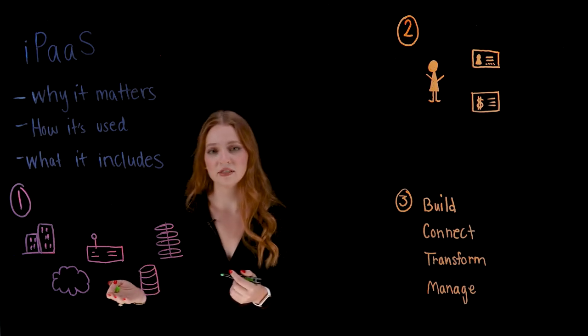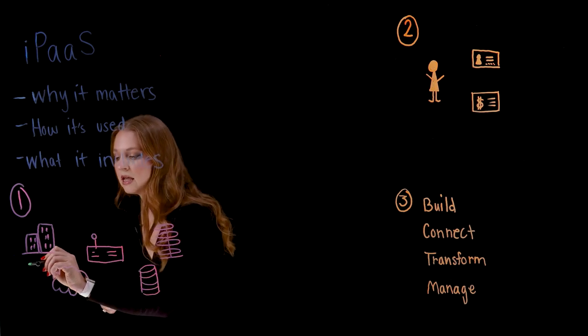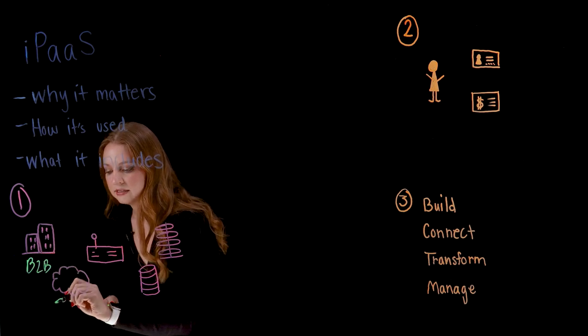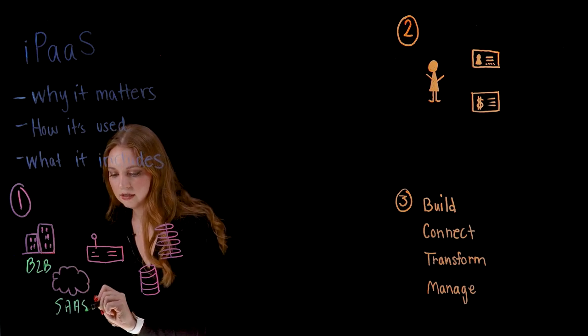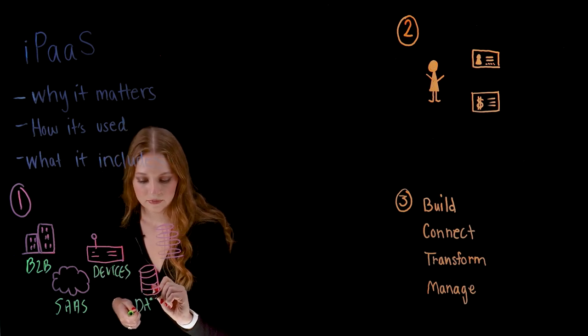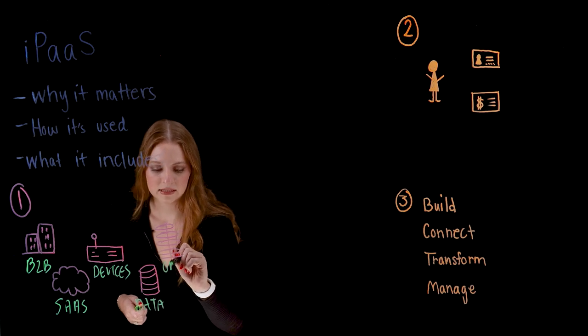If you consider the different types of systems that you might have within your company, they tend to look something like this: B2B, SaaS applications, devices, data, and on-premise systems.